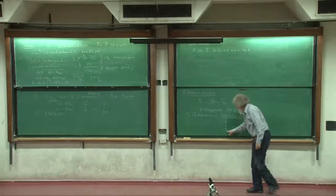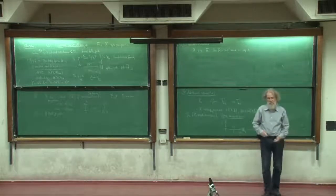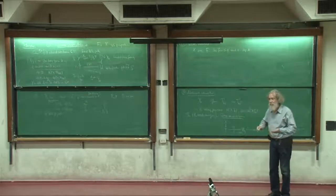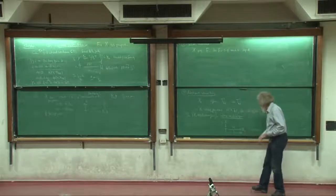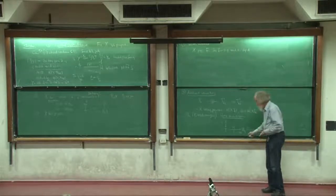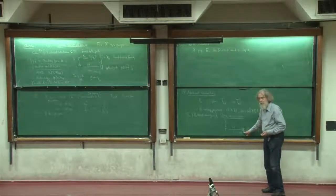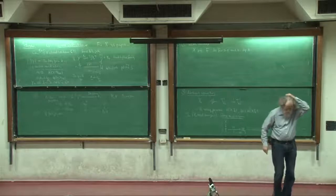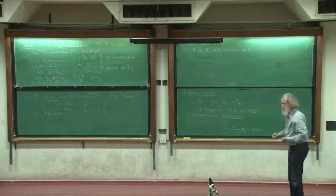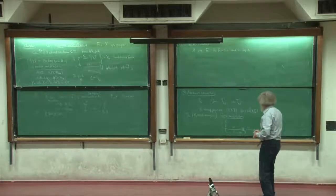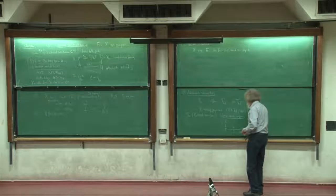We computed the other day that for a nonsingular curve, the deformation space has dimension 3g minus 3 and there are no obstructions. So if this were a fine moduli space, it would say M_g is nonsingular of dimension 3g minus 3. Well, it does have dimension 3g minus 3, but it may have singularities. Not for genus 1, but at least genus 2 or maybe genus 3 — there are singularities. This can have singularities.